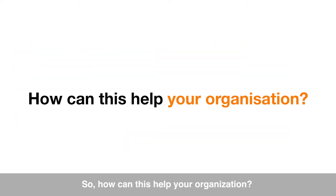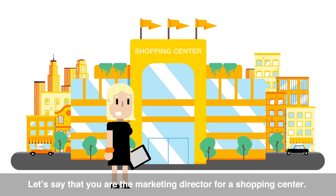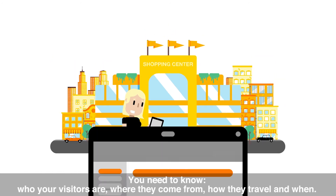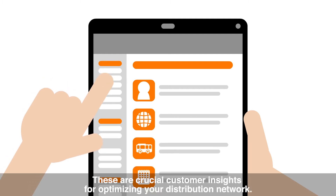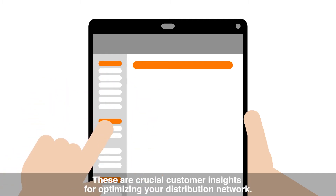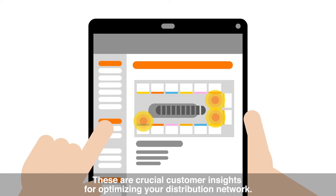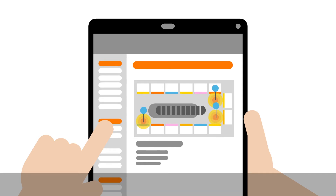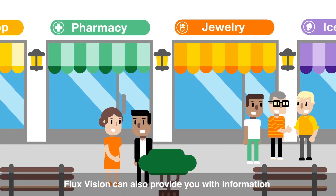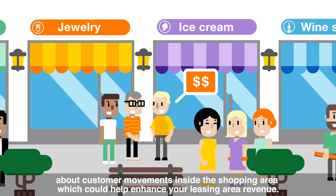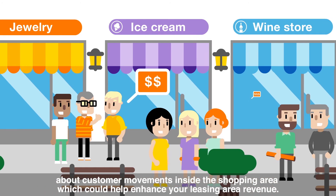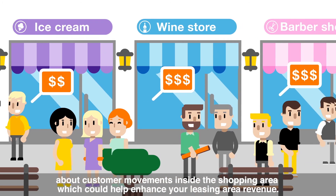So how can this help your organisation? Let's say that you are the marketing director of a shopping centre. You need to know who your visitors are, where they come from, how they travel and when. These are crucial customer insights for optimising your distribution network. FluxVision can also provide you with information about customer movements inside the shopping area, which could help enhance your leasing area revenue.